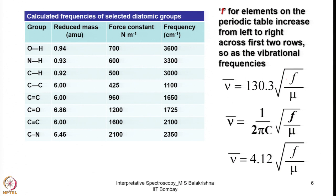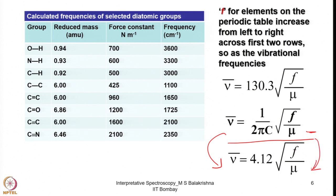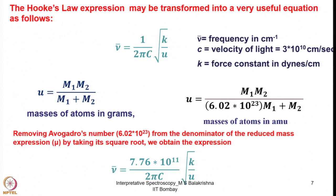Apart from this simple equation — nu bar equals 130.3 into square root of f over mu — we have a couple more equations. One is: nu bar equals 1 over 2 pi c into square root of f by mu. If you simplify this, it leads to nu bar equals 4.12 into square root of f over mu, with a little variation in the units of the force constant. Let me tell you how this is derived. The Hooke's law expression can be simply transferred into a very useful simplified equation.